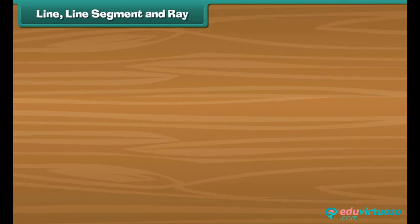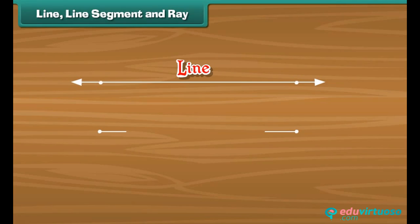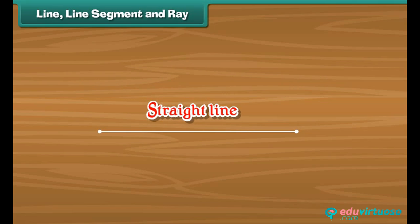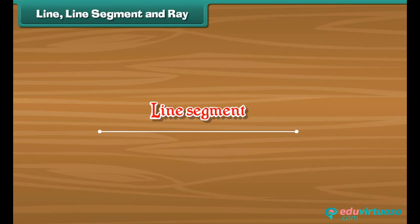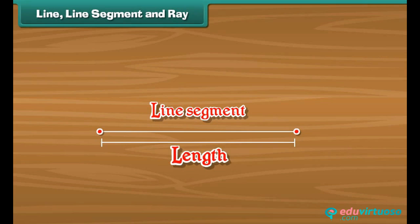A line is a group of points on a straight path. Plot two points and join them — the result is a straight line. A line has no end points; it can be extended infinitely from both sides. A line segment is a part of a line. It has two end points, a fixed length, and cannot be extended.